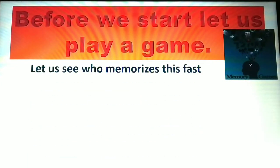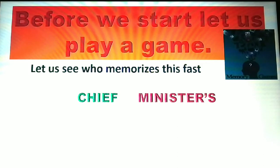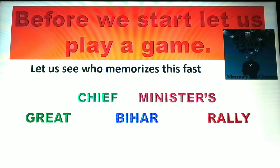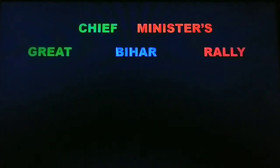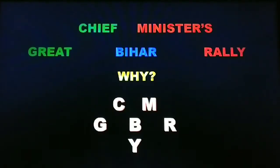Before we start, let us play a game. Let us see who memorizes this fast: 'Chief Ministers Great Bihar Rally.' That can be represented by the alphabets C, M, G, B, R, Y. C stands for cyan, M stands for magenta, G stands for green, B stands for blue, and R stands for red.